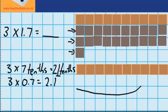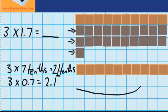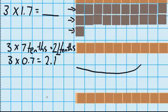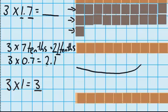Now there's also one whole in each of those groups — one whole here, one whole here, and one whole here. So there are three groups of one whole. I know three groups of 1 is 3. We worked out that three groups of 7 tenths is 2.1, or two wholes and 1 tenth. And three groups of 1 whole is 3. So now we can add those together: three wholes plus 2.1 gives me 5.1.